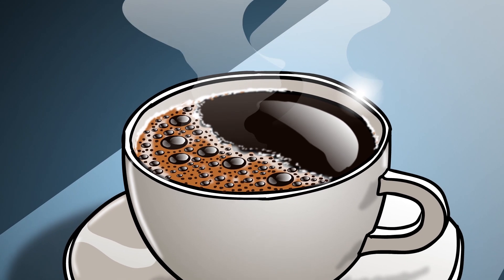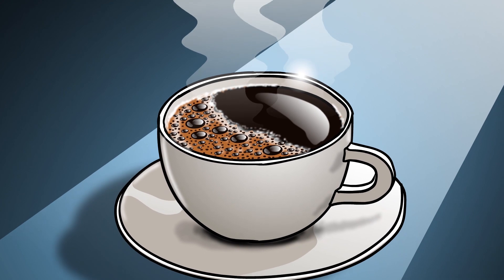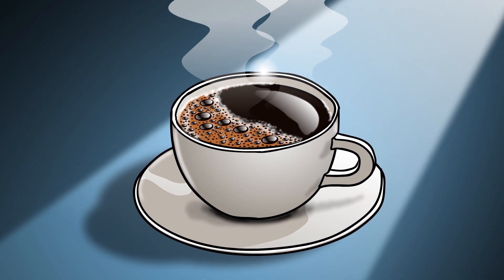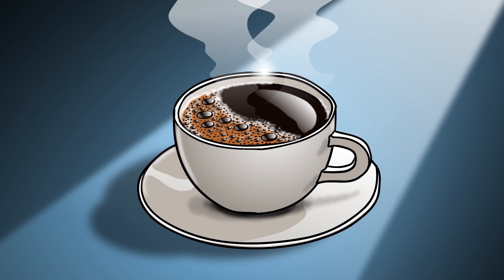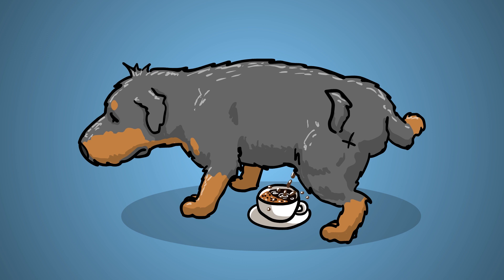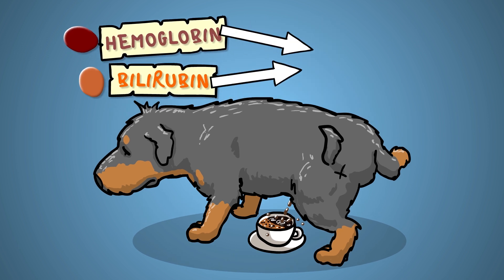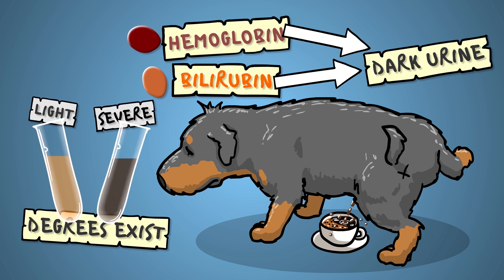Imagine a cup of coffee — an espresso, dark brown, almost black, rich in aroma, steaming hot with a ring of foam on top. Well, this is what dog urine can look like if all that hemoglobin and bilirubin get excreted into the urine. It's a matter of degree though, so light hemolysis will only make the pee slightly darker.